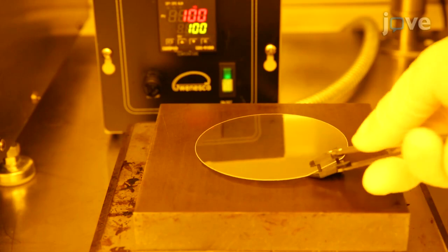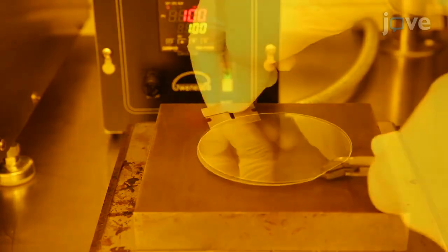To bake the wafer, place it on a hot plate at 100 degrees Celsius. After 3 minutes, transfer the wafer onto aluminum plate.